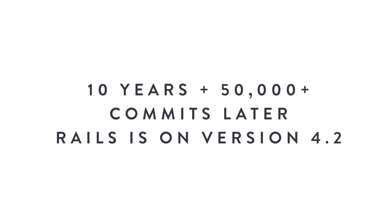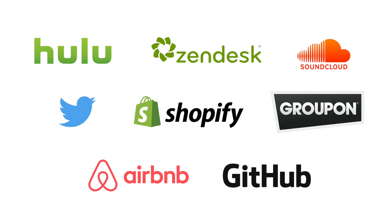Fast forward about 10 years and thousands of commits later, Rails is on version 4.2 at the time of this recording, and has been tested and proven by huge names such as Twitter, Hulu, Shopify, Groupon, Airbnb, GitHub, Zendesk, and SoundCloud, just to name a few.